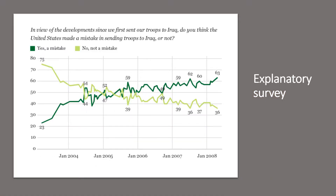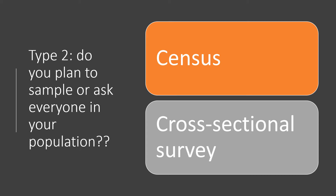Then we have explanatory surveys. Explanatory surveys gather descriptive data but they also establish cause and effect — to figure out why things might be the way they are. For example, a recent Australian survey collected data describing attitudes to the Iraq conflict, as well as data used to establish what might shape and form those attitudes, such as personal experiences, familial attitudes, or political leanings.